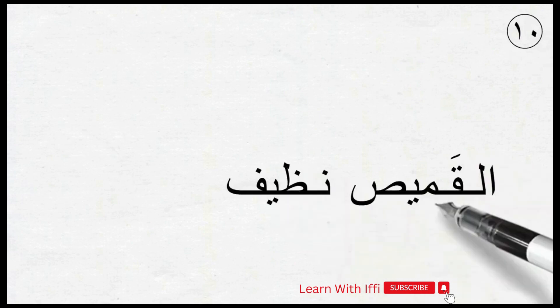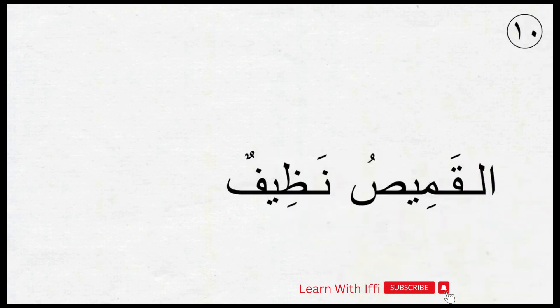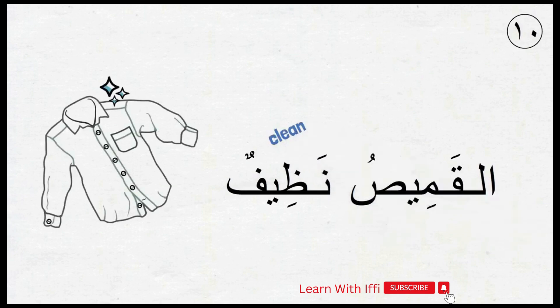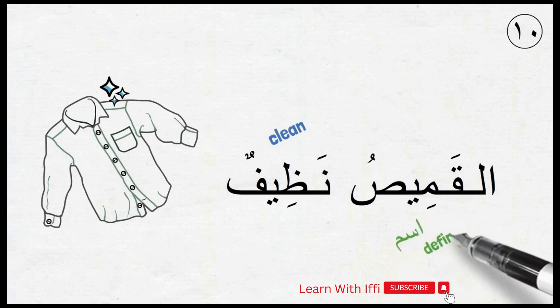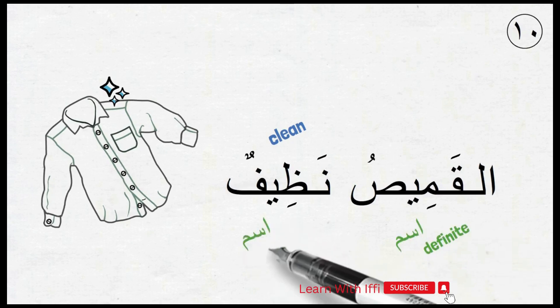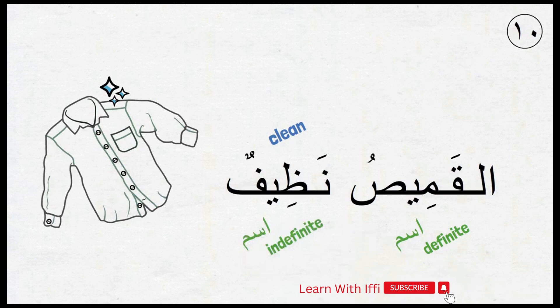Final sentence: أَلْقَمِيسُ نَظِيفٌ. نَظِيفٌ here means 'clean,' so we are saying the shirt is clean. I hope you are starting to see the structure of the sentence we are learning here. The first word is what we are really talking about and it is coming as definite ism. The second word is describing the first word and it is coming as indefinite ism. We will see a lot more sentences in this lesson following such structure and we will practice with them in the next few videos insha'Allah.